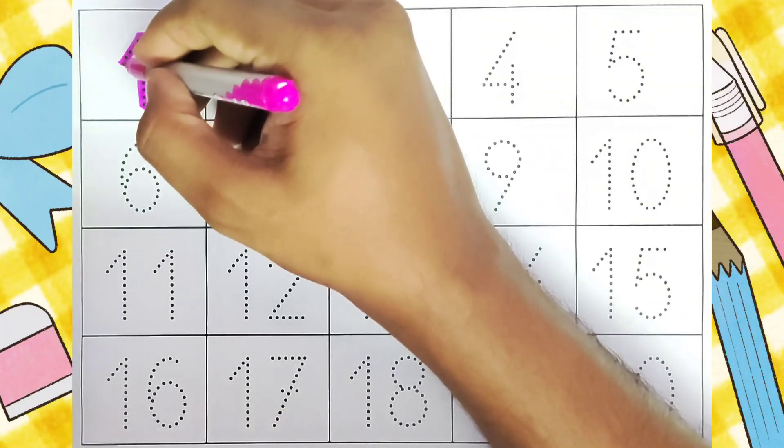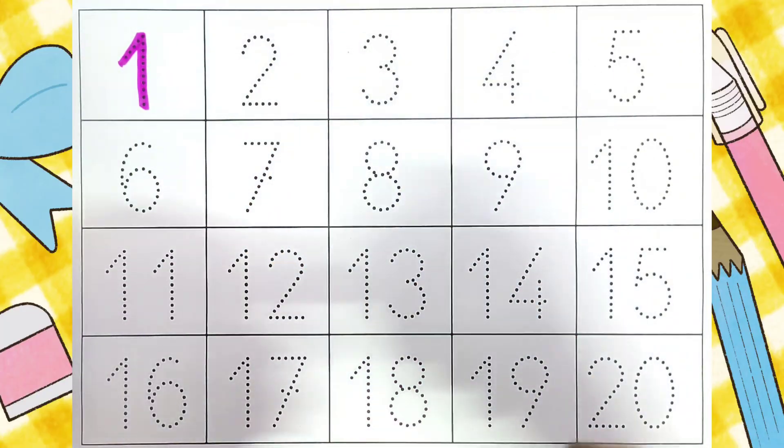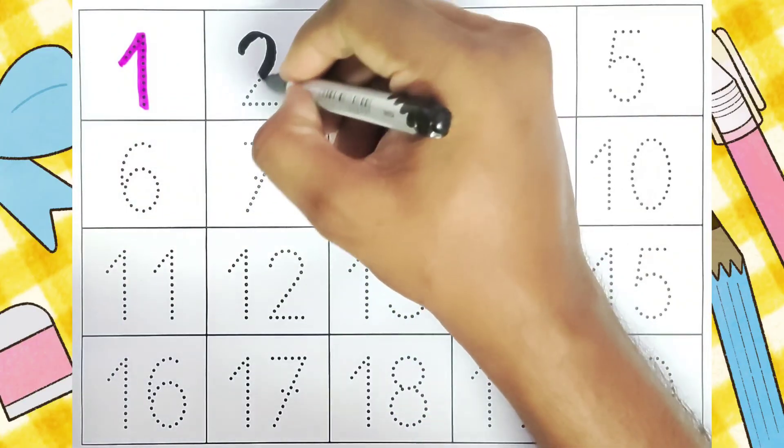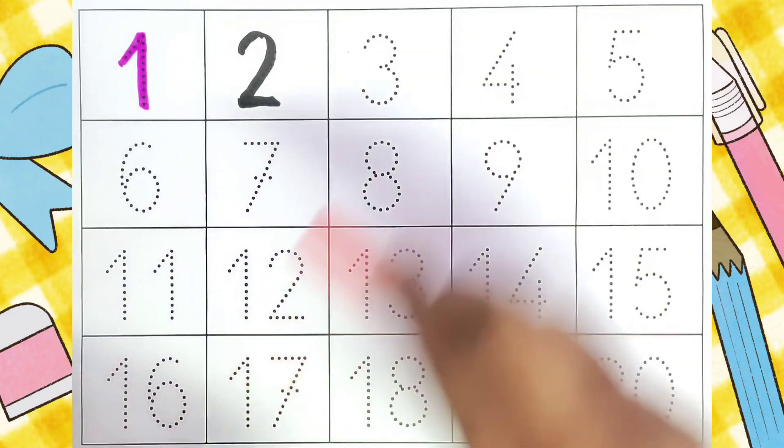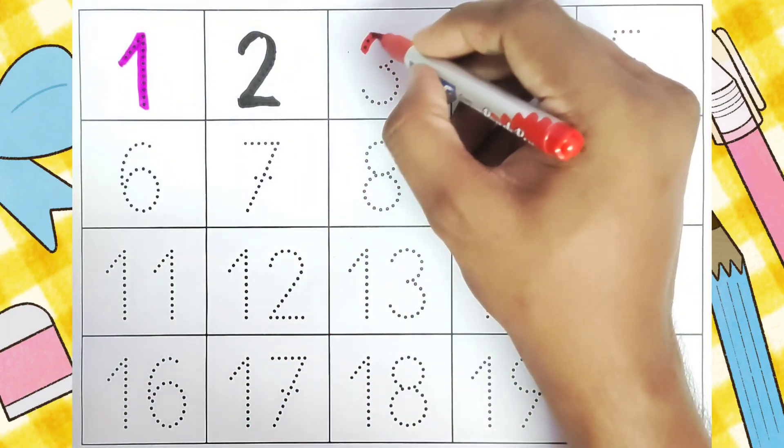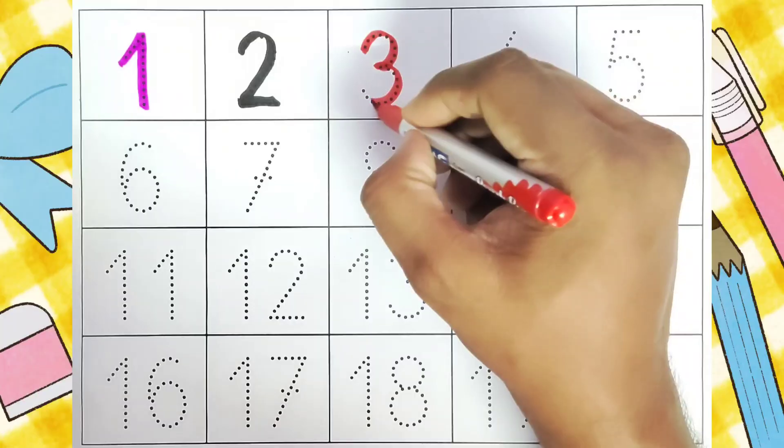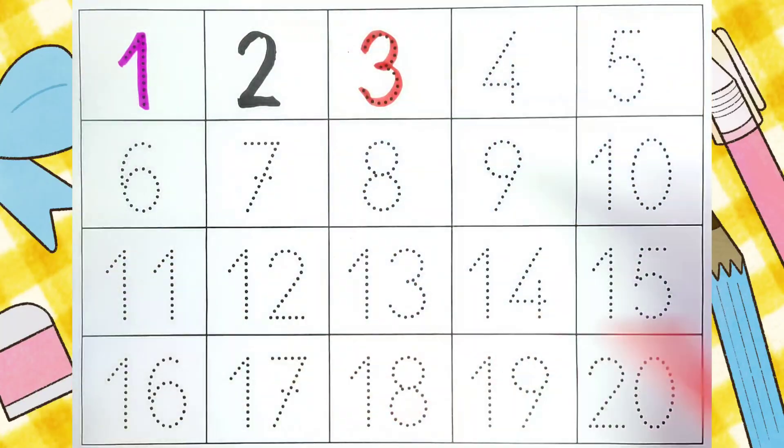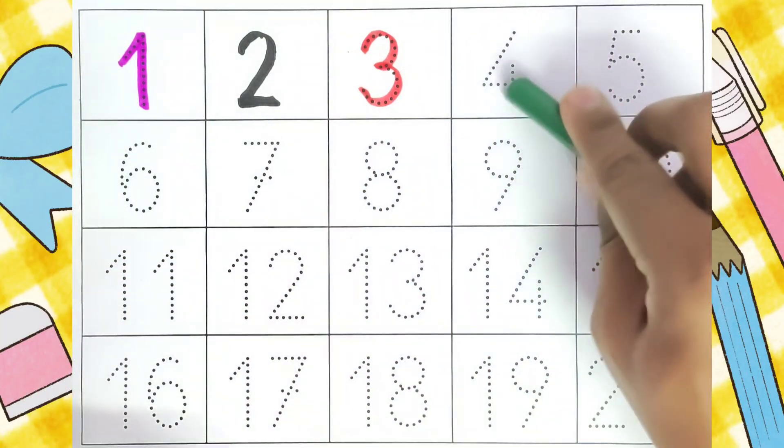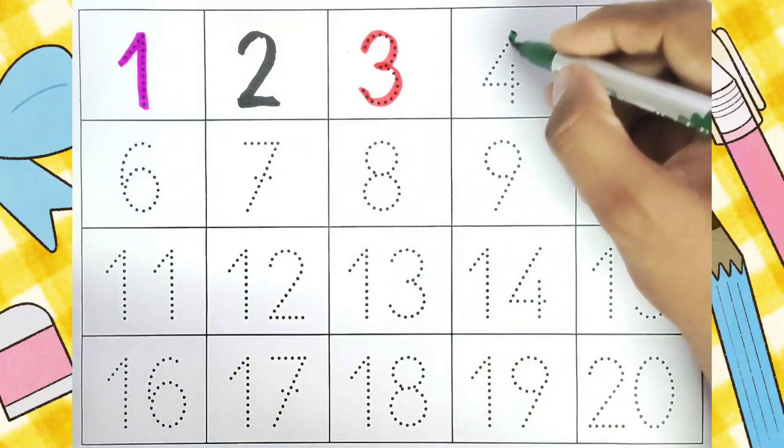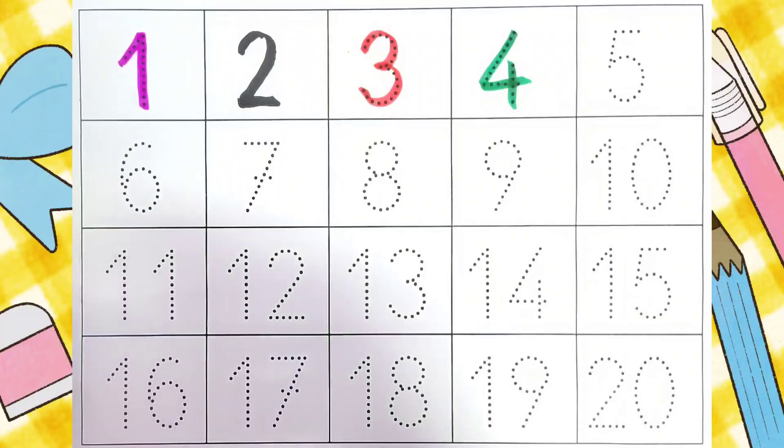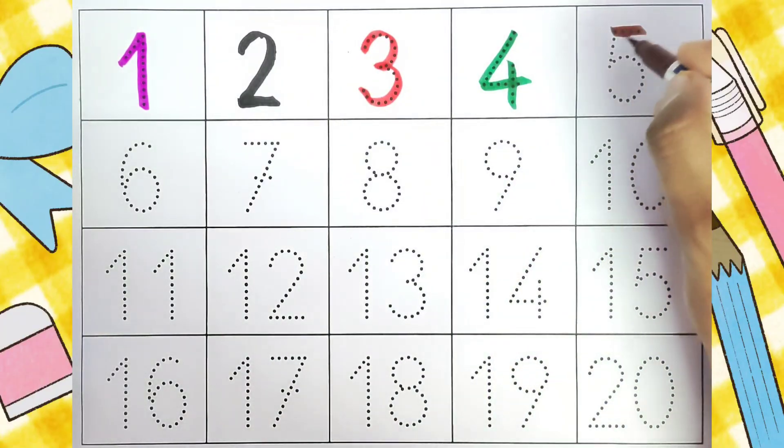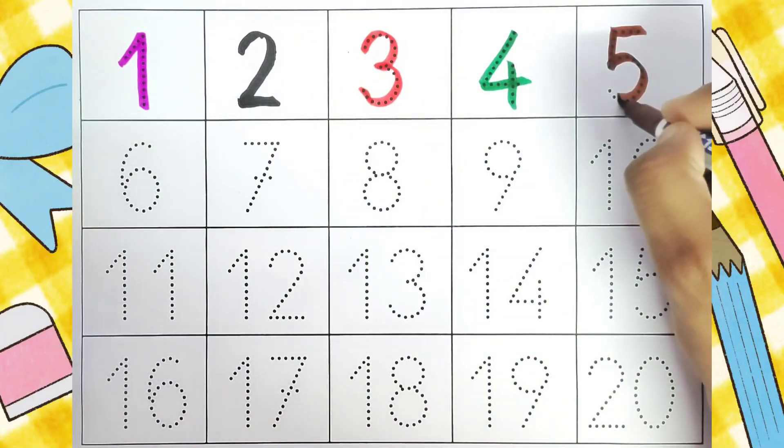One. One. Two. Two. Three. Three. Four. Four. Five. Five.